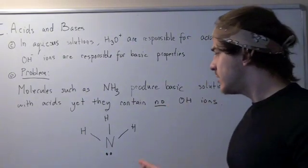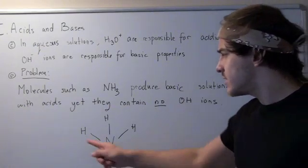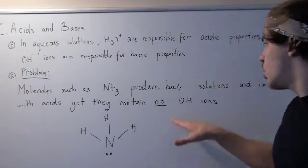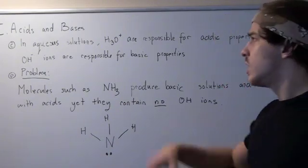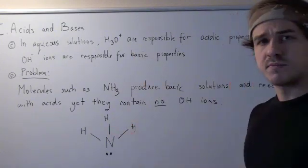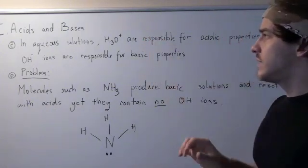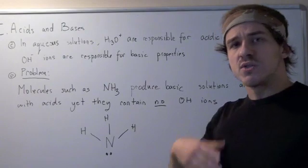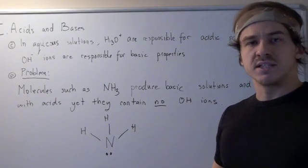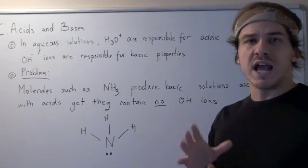If we look at the structure of NH3 ammonia, we see that it contains three H's, one N, and a lone pair of electrons. Clearly, it has no OH ions. So according to our Arrhenius acid-base definition, this cannot be a base — yet it has basic properties. So this definition isn't that good. They came up with a better definition that includes many more bases and many more acids, called the Bronsted-Lowry acid-base concept.